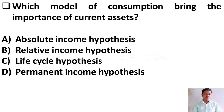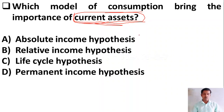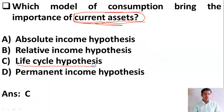Question number two: which model of consumption brings the importance of current assets? There are four macroeconomic theories: absolute income hypothesis, relative income hypothesis, permanent income hypothesis, and life cycle hypothesis — all four are very important. Option A: absolute income hypothesis. Option B: relative income hypothesis. Option C: life cycle hypothesis. Option D: permanent income hypothesis. The right answer is Option C — life cycle hypothesis.